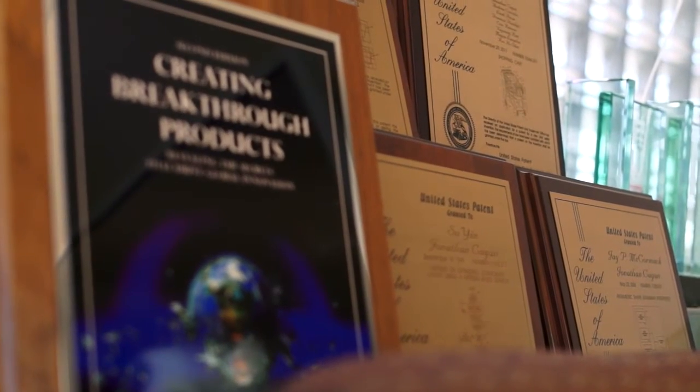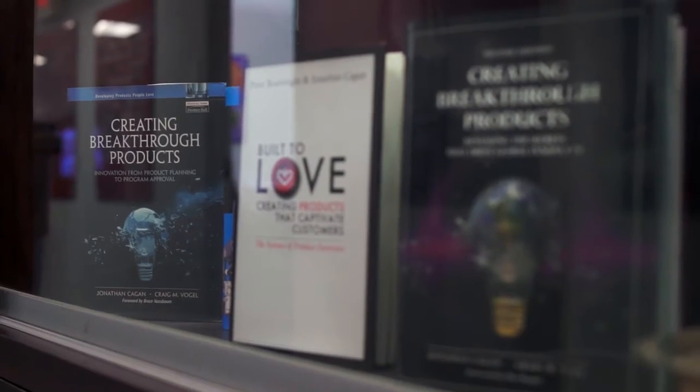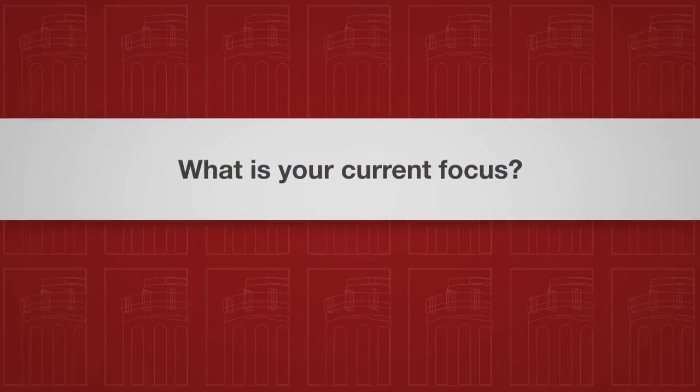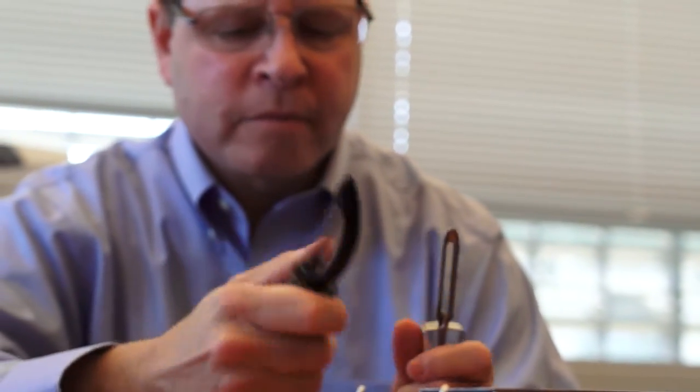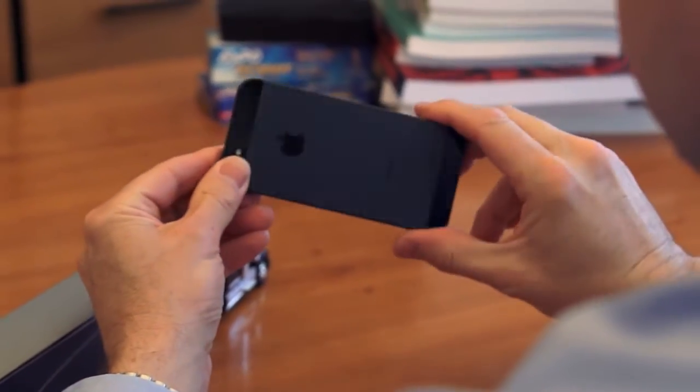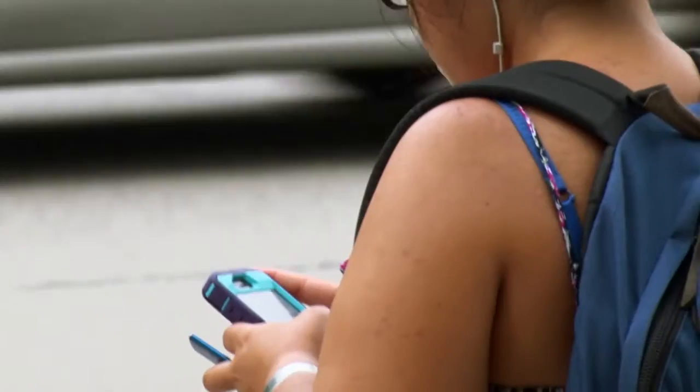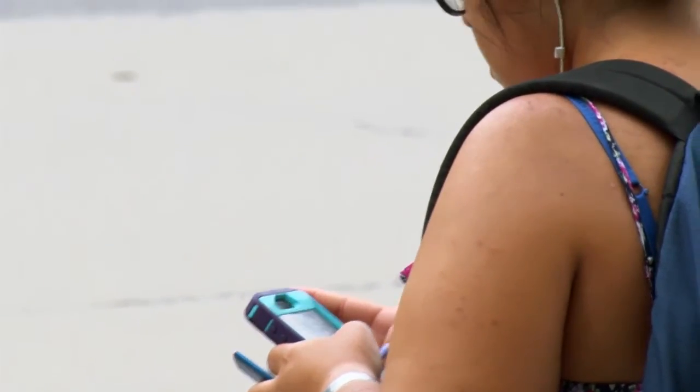My name is Jonathan Kagan. I am Professor of Mechanical Engineering. Generally, I work in the area of design and innovation theory, methods, and practice. Our goal is to more fundamentally understand how people design innovative systems and products, and also how people react to those systems and products, so we can create better tools, methods, and a more fundamental understanding of what it takes to create innovations for the marketplace.